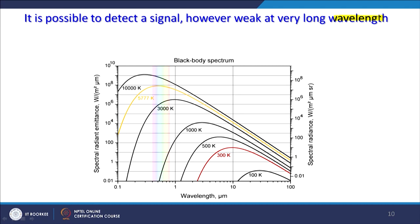Looking at the spectral radiant emittance curves — with watts per square meter on the Y-axis at different wavelengths — we can see the visible part shown here. The 300 Kelvin curve represents natural objects or the Earth's surface. Spectral radiance is on another axis, and as you see, when we go towards lower wavelengths we get high emittance.